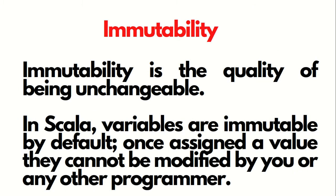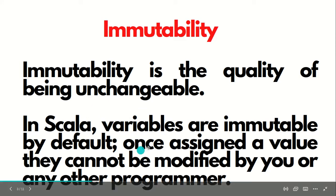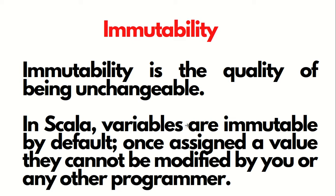Second is immutability. What is immutability? It's a quality of being unchangeable. In Scala, the variables are immutable by default. Once assigned a value, they cannot be modified by you or any other programmer. This is one of the good points of Scala as a language.